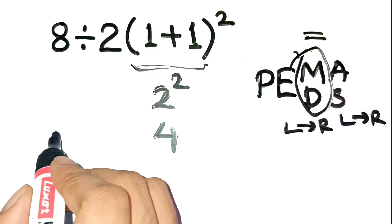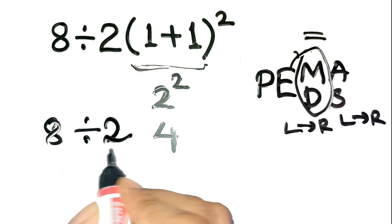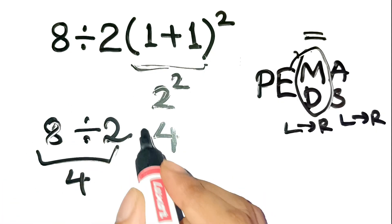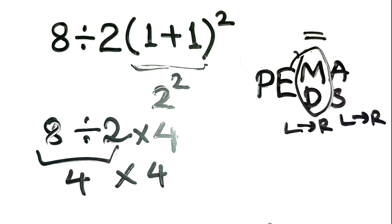Now, moving left to right, we have 8 divided by 2, which is 4. Then multiply that result by the 4 from the exponent. 4 times 4 equals 16.